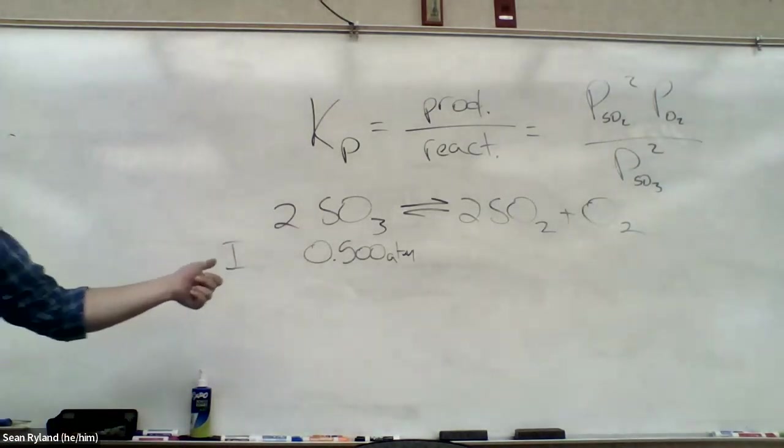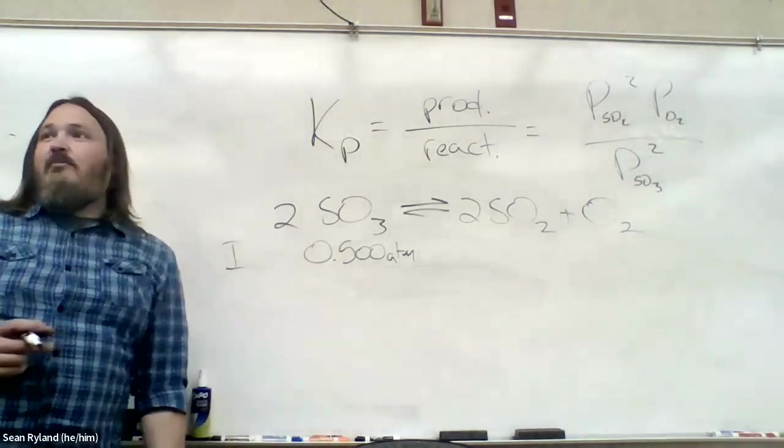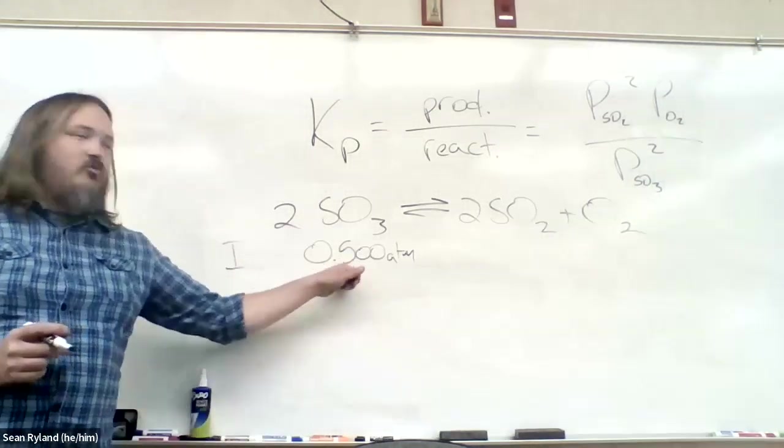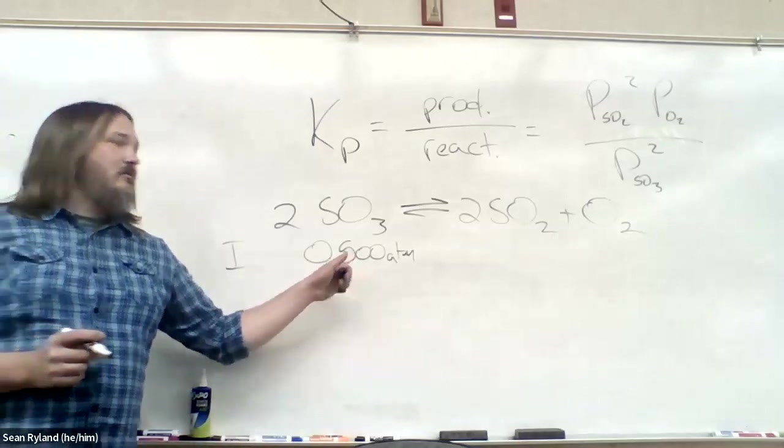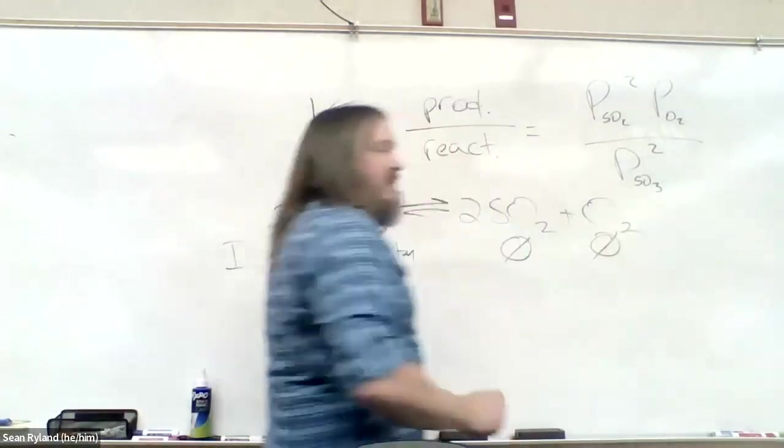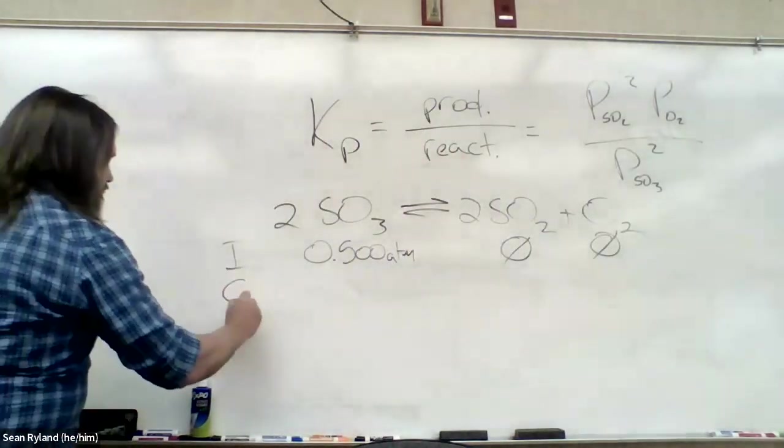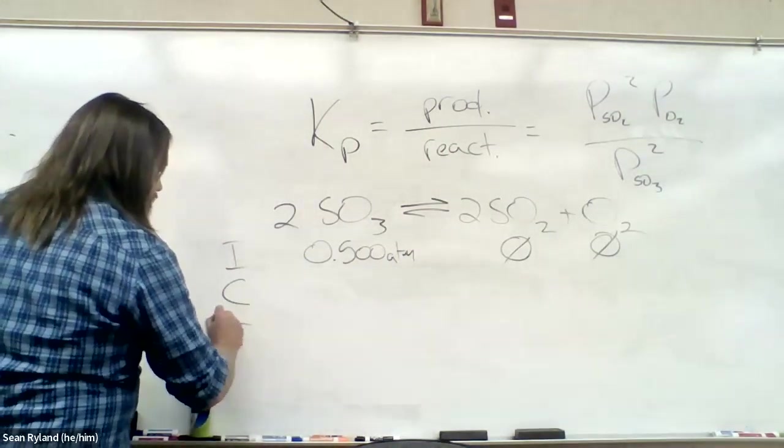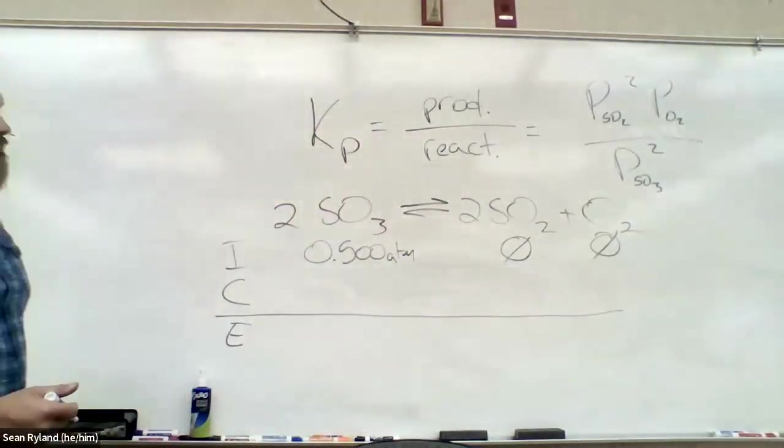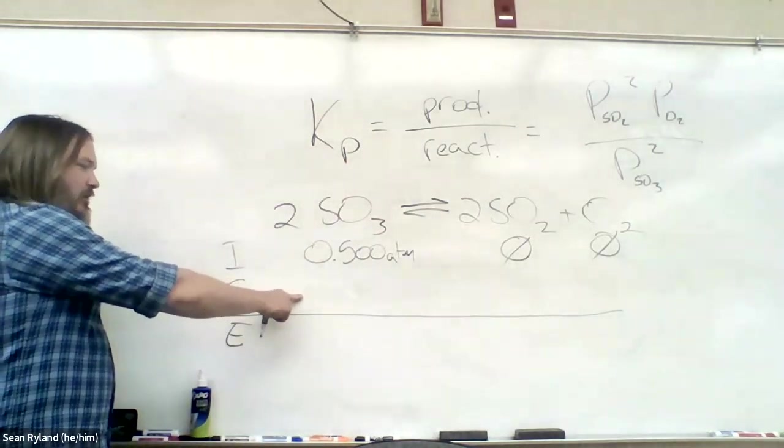Pressure is proportional to concentration. Meaning, since everything's at the same temperature and everything's in the same container, we can just actually do this just with atmospheres. We don't actually need to change this. Partial pressures work just as well for an ice table as moles, which is nice because that saves us some steps.